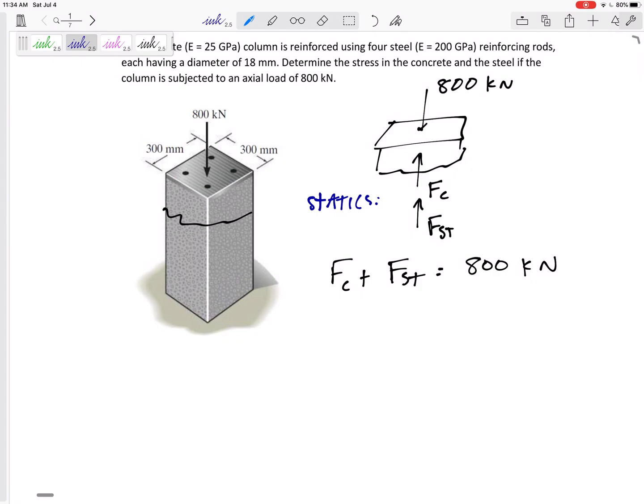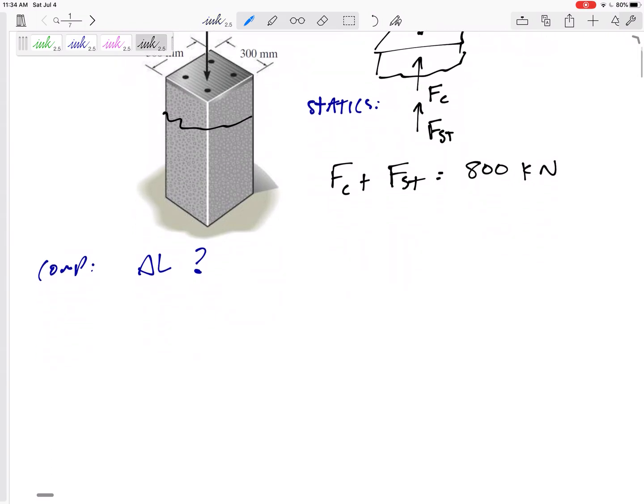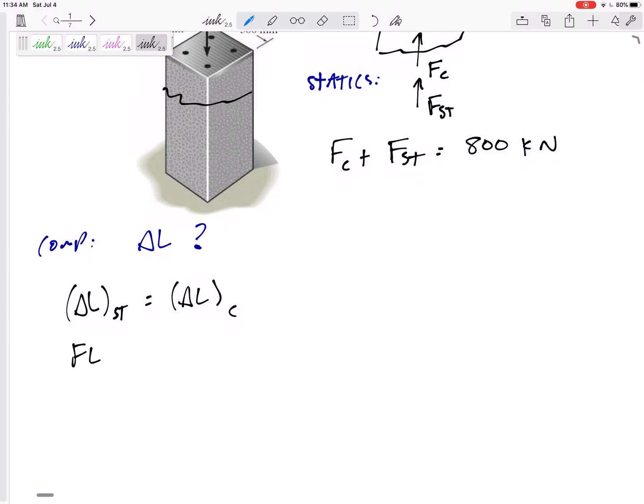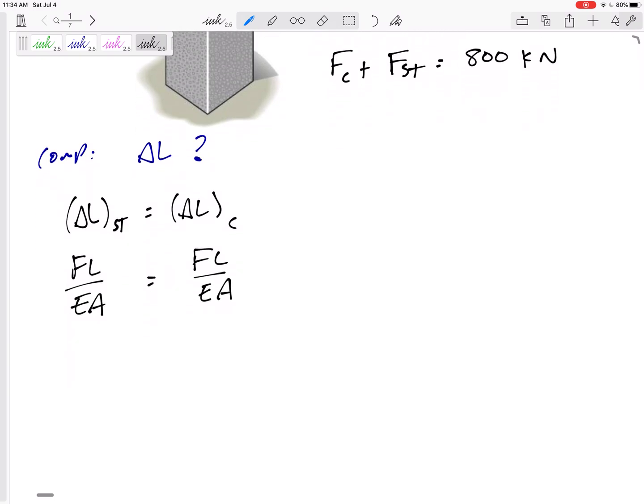So this was statics. We had one equation but it was not enough. So this is going to be our compatibility. And I like to just ask myself: what does the delta L do? What does the length, the lengths of these do? Well, I think you could imagine all these lengths are going to compress by the same amount. They're going to equal each other, right? The delta L of the steel is going to equal the delta L of the concrete.